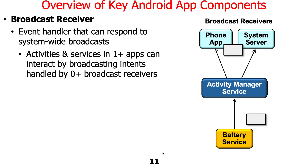There's a battery service that keeps track of the power left in the battery. When it crosses a certain threshold — say, going from 21% to 20% left — it sends an intent. That intent goes to something called the activity manager service, which handles these broadcast intents. The activity manager keeps track of everybody who's registered for the battery-getting-low event, and then sends that notification on to all of the interested broadcast receivers who care about this.